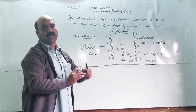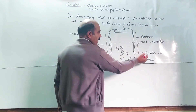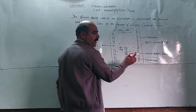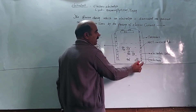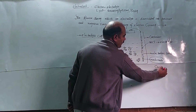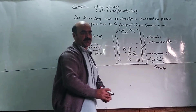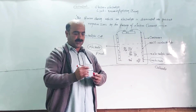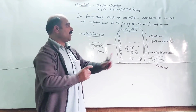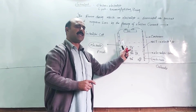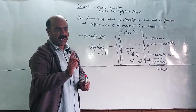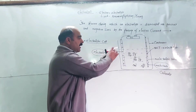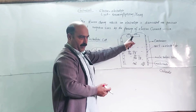The electrode connected to the negative terminal of the battery acquires a negative charge. This negatively charged electrode is called the cathode. So the positively charged metallic plate is the anode and the negatively charged metallic plate is the cathode. These charged metallic plates are called electrodes.